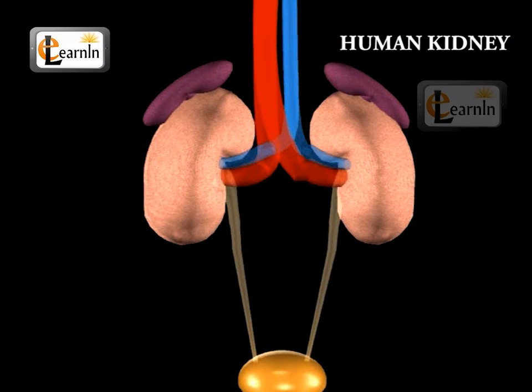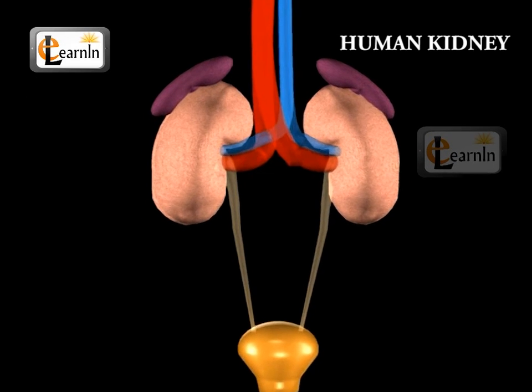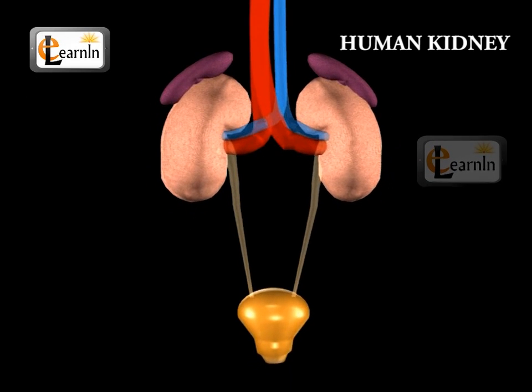On top of each kidney, an adrenal gland is present. Adrenal glands have nothing to do with excretion.